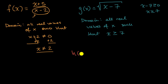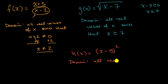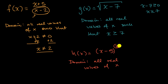Let's do one last example. Let's say we're told that h of x is equal to x minus five, squared. What's the domain here? The domain is all real values of x. Is there anything that would cause this to not evaluate to a defined value? Well, we can square any real number and we'll just get another real number. So x minus five can be anything, and x can be anything. The domain is all real values of x — we didn't have to constrain it at all.